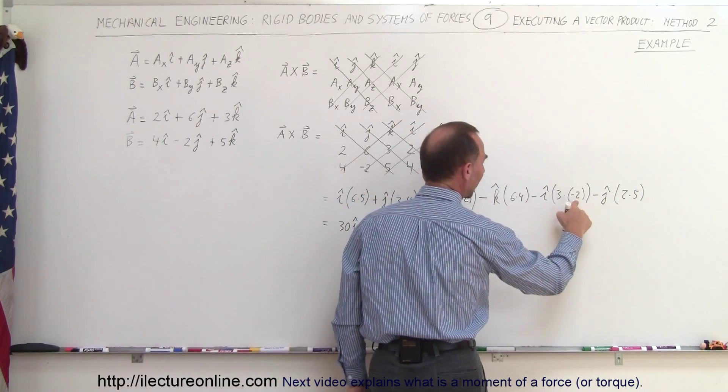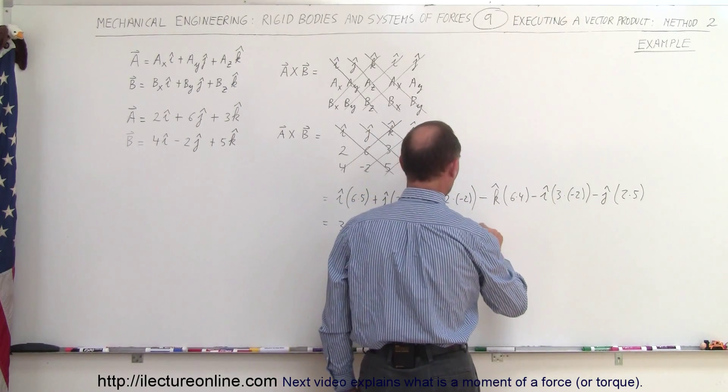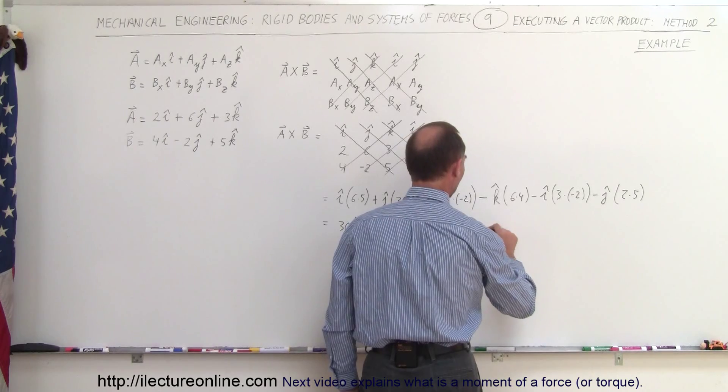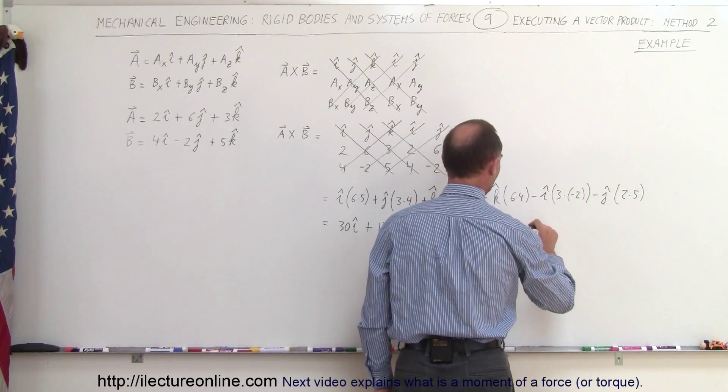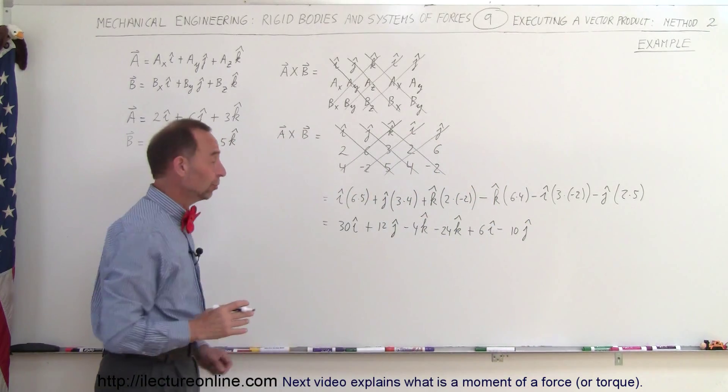Here we get that's a minus times a minus, that would be plus 6I, and here we get minus 10J. And finally combine like terms.